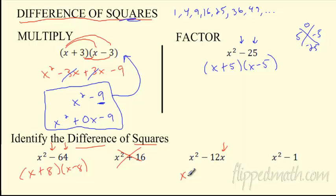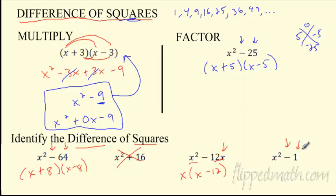Don't confuse those two — they kind of look similar. The last one: x²−1. We have the negative sign, and 1 is a perfect square (1×1=1), so this works out to x+1 times x−1. The best way to do these is to actually practice them.